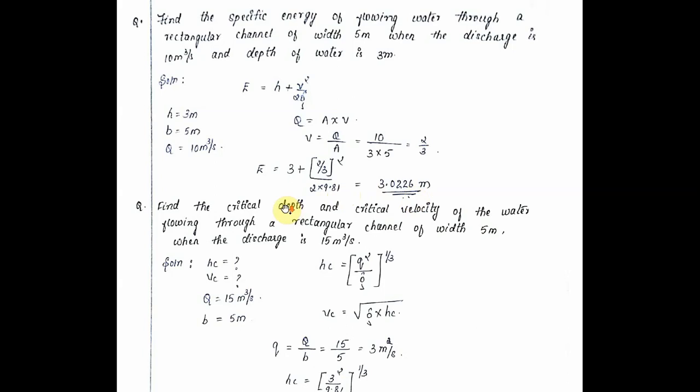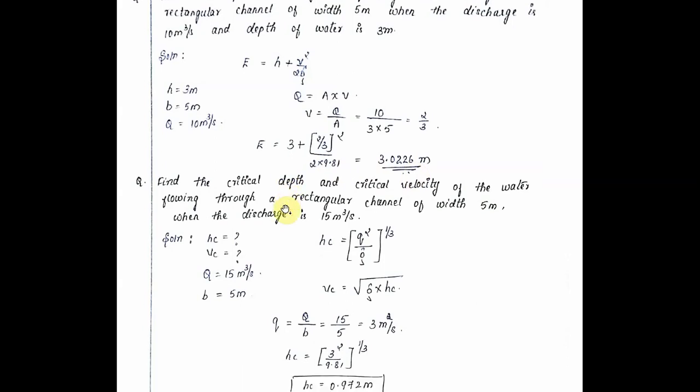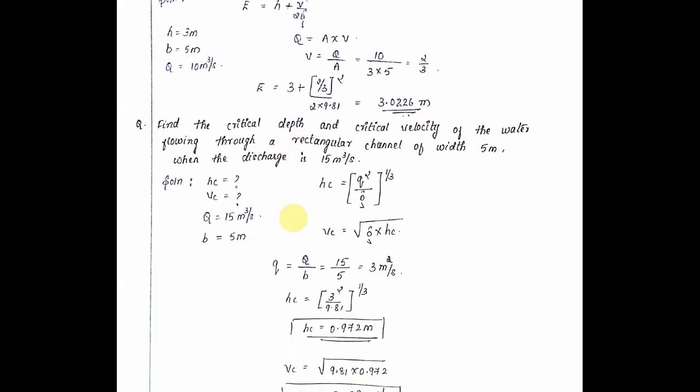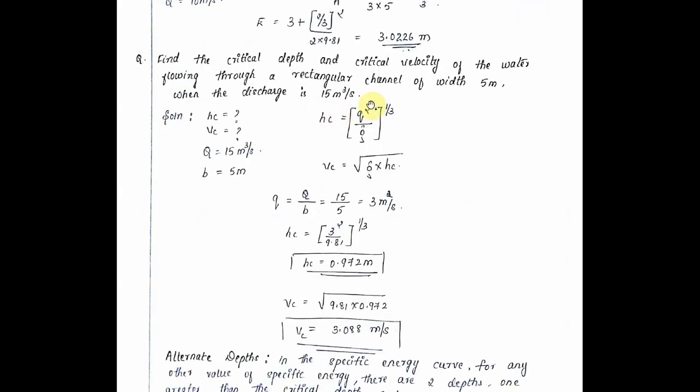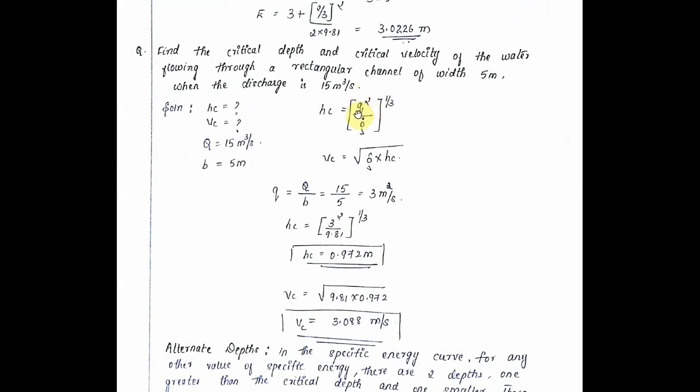Next one: find the critical depth and critical velocity of the water flowing through a rectangular channel of width 5 meters when the discharge is 15 cubic meters per second. So given: find hc critical depth and vc critical velocity. Q is given as 15 cubic meters per second and breadth is 5 meters.